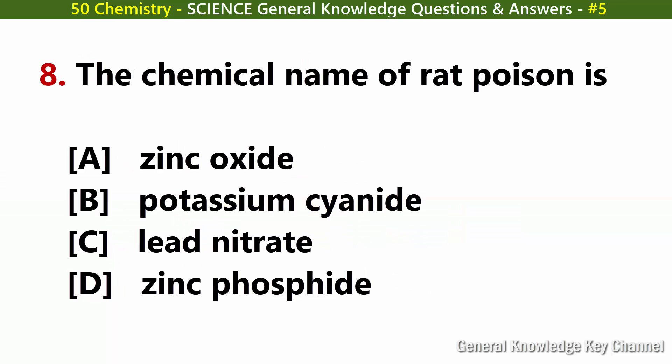The chemical name of red poison is. Answer D: Zinc phosphide.